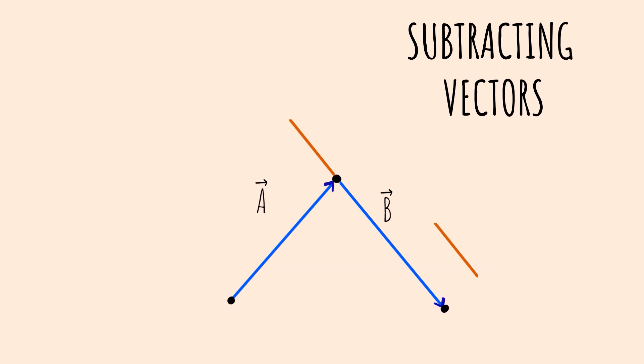Similarly, to subtract two vectors, we can add negative of a vector, which is the same vector with opposite direction to the other vector.